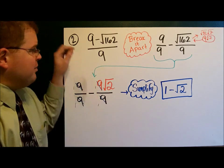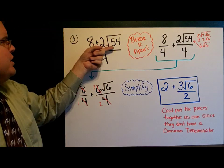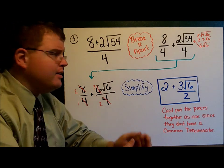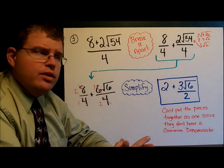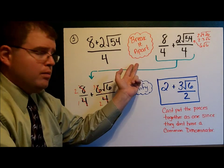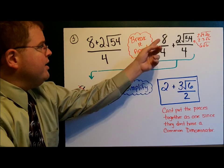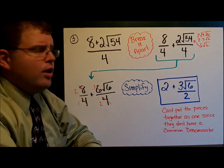In our third example, we have something really cool going on here. We have a square root with a coefficient. We have 8 plus 2 square roots of 54 all over 4. First thing we do, you set it, break it apart. 8 over 4 plus 2 square roots of 54 over 4.